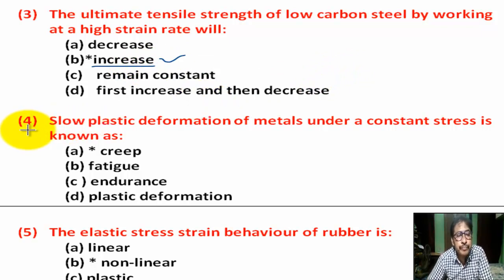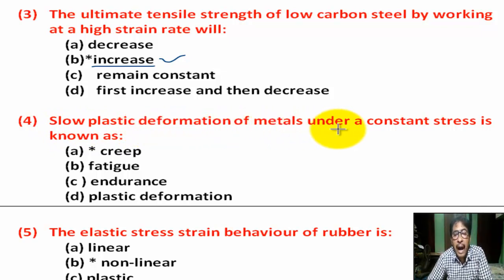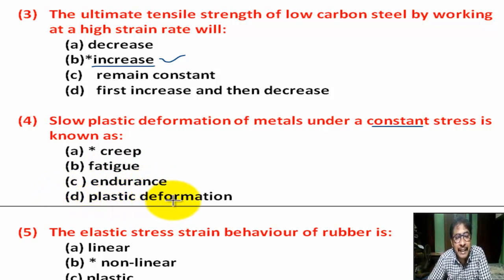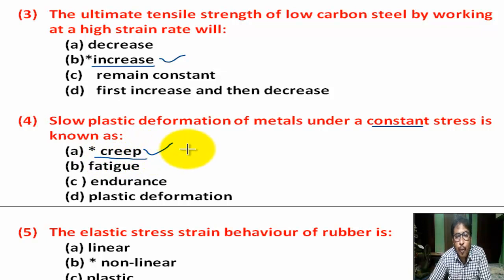Question number 4: Slow plastic deformation of metals under a constant stress is known as — Option A: creep. Option B: fatigue. Option C: endurance. Option D: plastic deformation. Correct answer is Option A — creep.